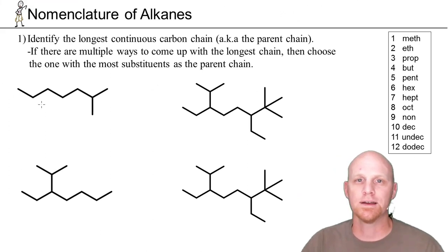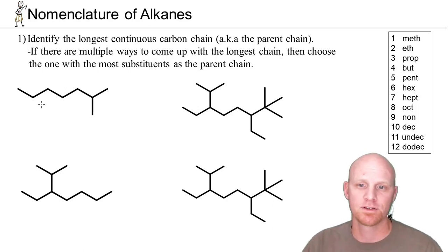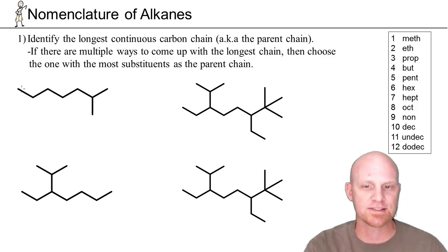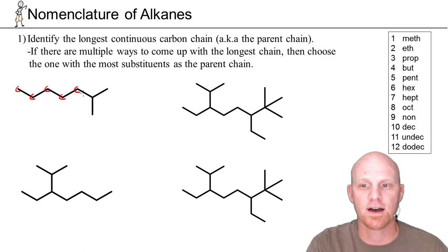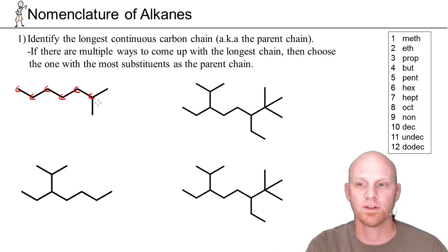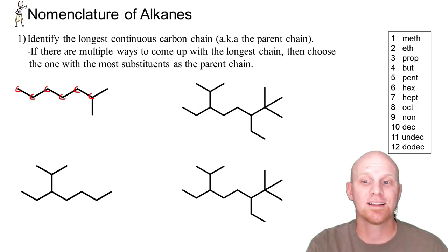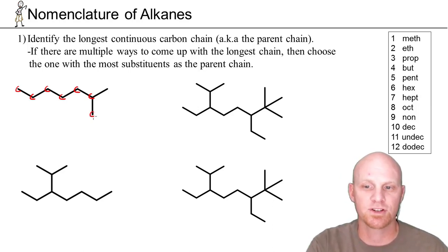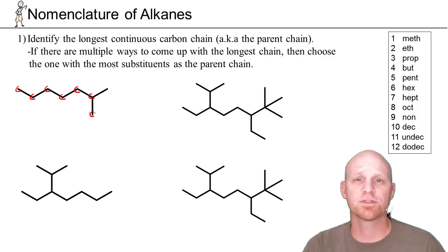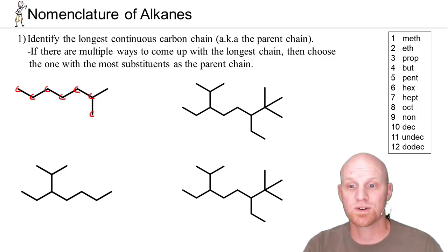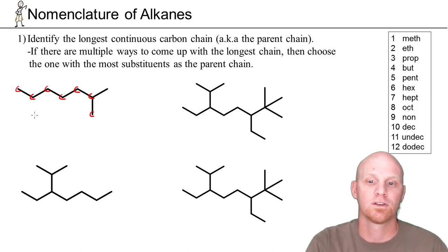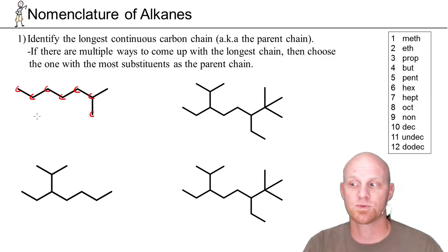In naming alkanes, rule number one says identify the longest continuous carbon chain — we call this the parent chain. In this first example using line-angle structures, every vertex is a carbon. Counting through, we get one, two, three, four, five, six, then we branch. Going either direction gives equivalent one-carbon methyl groups, so we can pick either. Choosing down gives us a seven-carbon chain, which has the root name heptane.